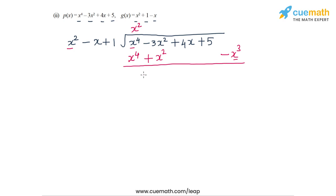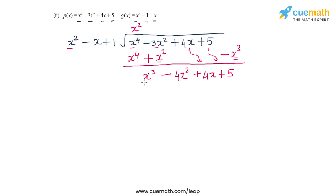We have x³, then -3x² - x² which is -4x², and we bring down 4x and 5. The highest degree term in the new dividend is x³, so the next multiplier is x to turn x² into x³. With multiplier x the terms generated are x³ - x² + x.